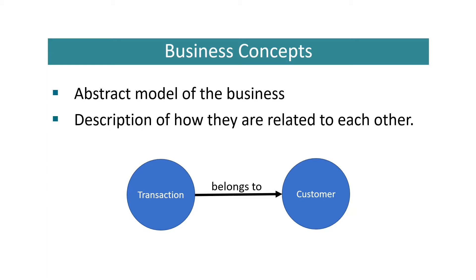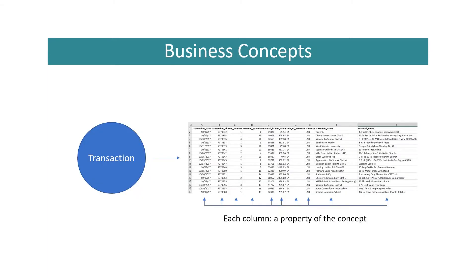For example, the concept transaction is related to the concept customer by the relationship 'belongs to.' The purpose of these concepts is to capture and explain the underlying data they hold and represent. This is the most powerful feature that sets knowledge graphs apart from relational tables, because there is no way to represent an abstract concept in relational databases.